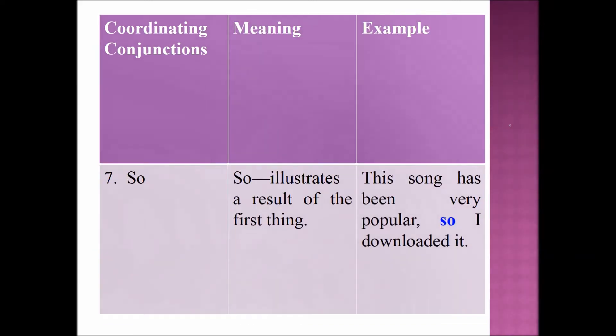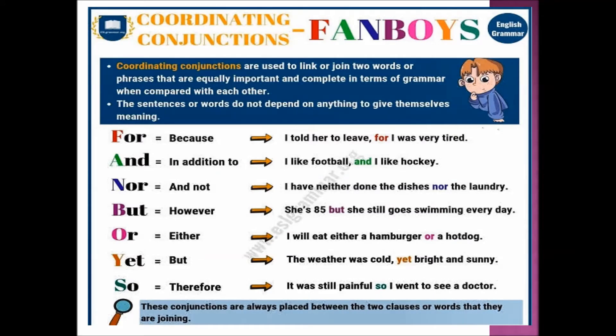Finally, we are going to learn about SO. SO illustrates a result of the first thing. Example sentence: 'This song has been very popular, so I downloaded it.' As a whole, coordinating conjunctions are used to link or join two words or phrases that are equally important and complete in terms of grammar. The sentences or words do not depend on anything else to give themselves meaning.